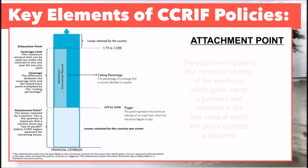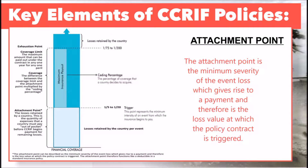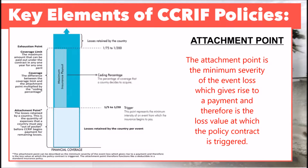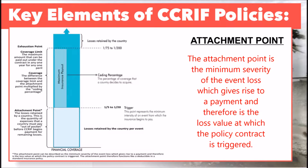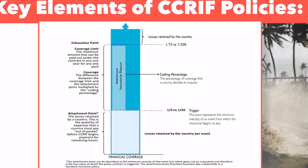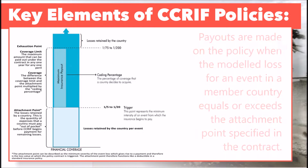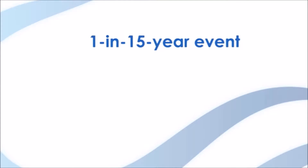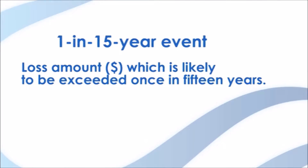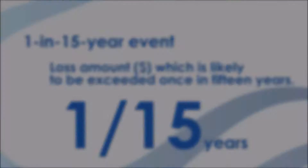The attachment point can be described as the minimum severity of the event loss which gives rise to a payment, and therefore is the loss value at which the policy contract is triggered. The attachment point functions like a deductible in a standard insurance policy. Payouts are made on the policy when the model loss for an event in a member country equals or exceeds the attachment point specified in the contract. The specific country covers all losses below the attachment point for any event. An attachment point selected for a 1-in-15-year event represents the loss amount in dollars which is likely to be exceeded once in 15 years.